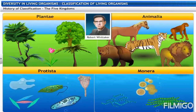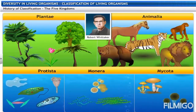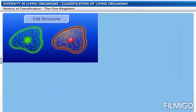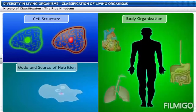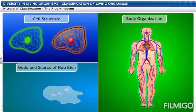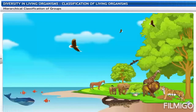Finally, in 1969, R.H. Whittaker proposed the five-kingdom classification and introduced Mycota to add fungi. The five-kingdom classification proposed by Whittaker is still in use today. These kingdoms were formed on the basis of cell structure, mode of nutrition, and body organization — whether they are unicellular or multicellular.